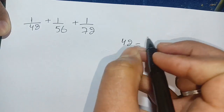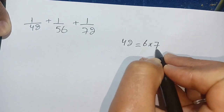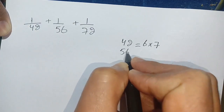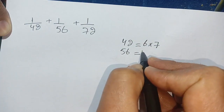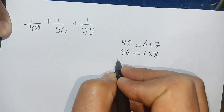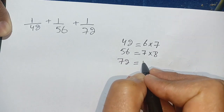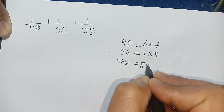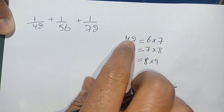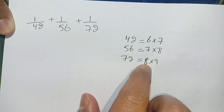42 is equal to 6 times 7 — 6 times 7 becomes 42. Same case with 56: it is also the product of two consecutive numbers, meaning 7 times 8, which becomes 56. And 72 is the same — the product of two consecutive numbers, 8 times 9, which becomes 72. Now replacing 42 by 6 times 7, and 56 by 7 times 8, and 72 by 8 times 9.